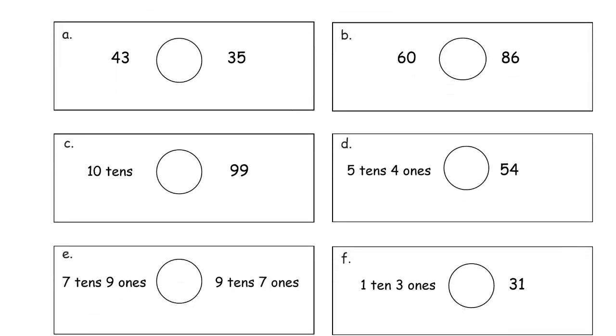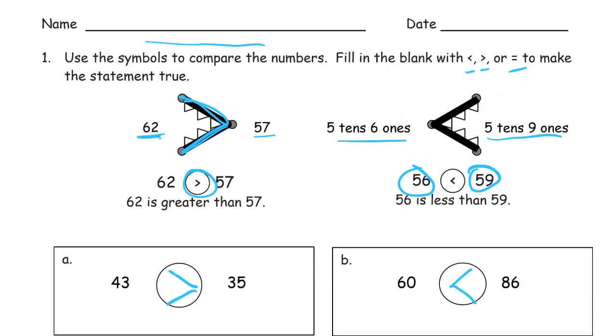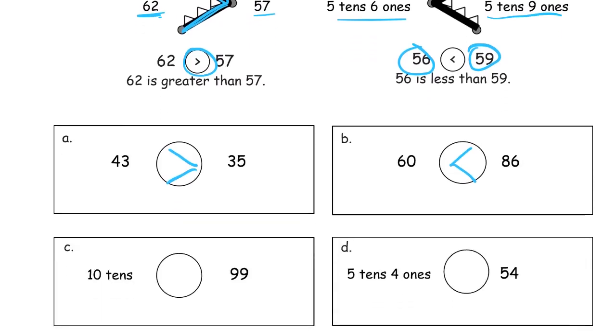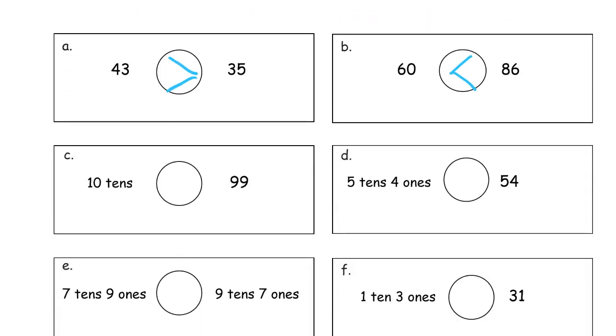We have 43 and 35, and 43 is greater. 60 and 86, 86 is bigger, so the alligator is going to eat the 86. And I'm going to read these out loud as I do it. So for A, I would say 43 is greater than 35. That's how you read it. Always start with the number on the left, and then say whether it's greater than or equal to the number that's on the right. 60 is less than 86.